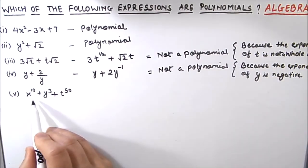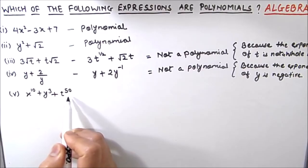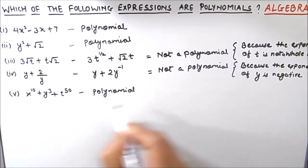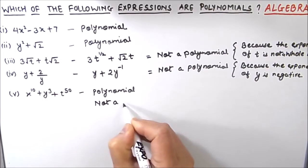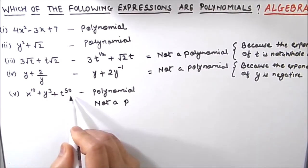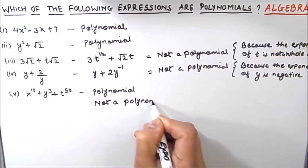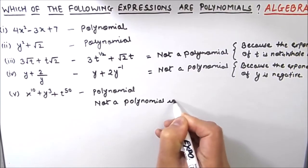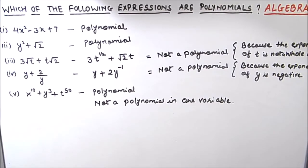The last expression is x to the power 10 plus y cubed plus t to the power 50. This expression is a polynomial, but it is not a polynomial in one variable because it has three variables: x, y, and t. It is a polynomial having three variables. So this completes our video.